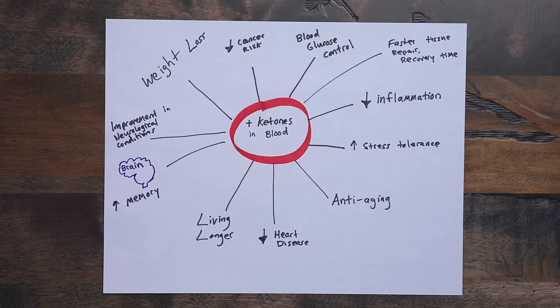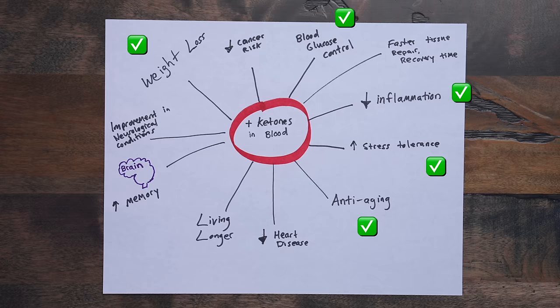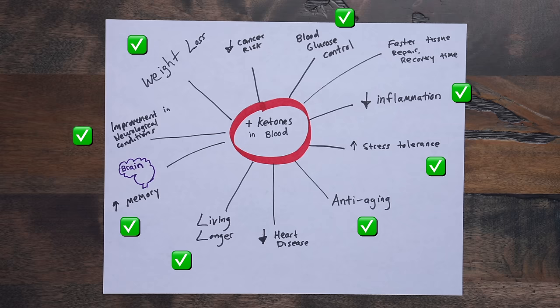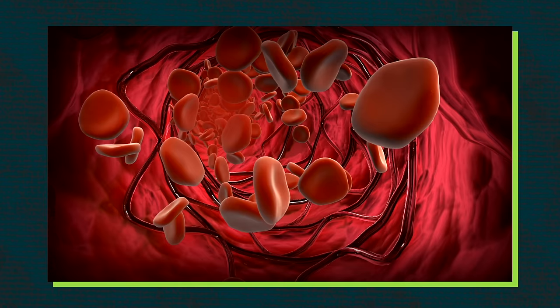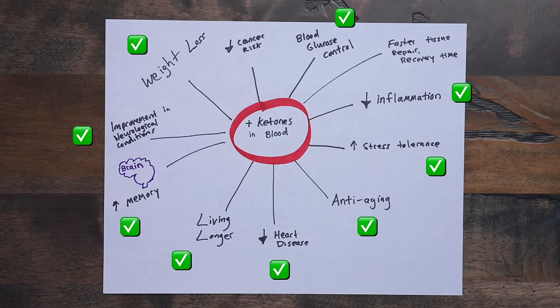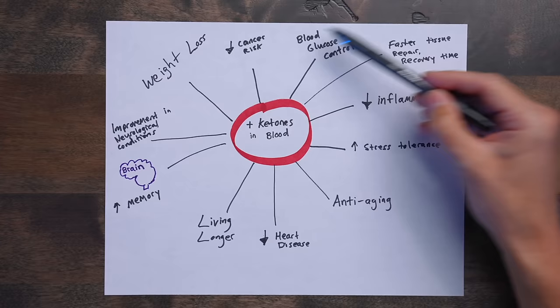But as long as those ketone levels are low, it's okay. It's when they're taken to the extreme is when you run into danger, and you're certainly not going to get into dangerous levels of ketones in the blood if you're fasting for, let's say, 16 hours a day. In fact, there's several studies showing that low levels of ketones in the blood have health benefits. We're talking about weight loss, improved blood glucose control, decreased levels of inflammation, better stress tolerance, anti-aging effects, living longer, improvements in memory, improvements in neurological conditions, decreased rates of heart disease, decreased rates of cardiovascular disease, even decreasing cancer risk.